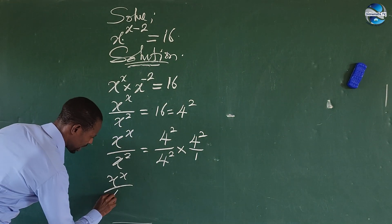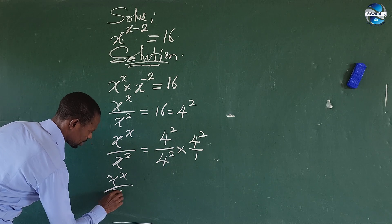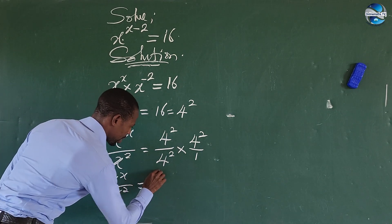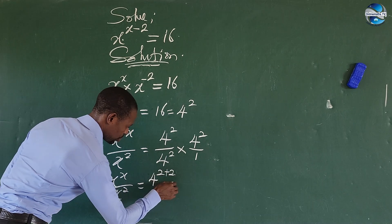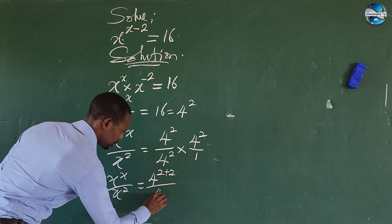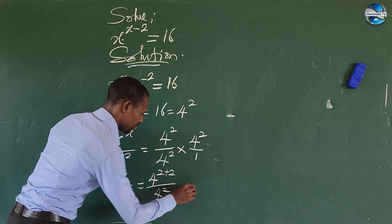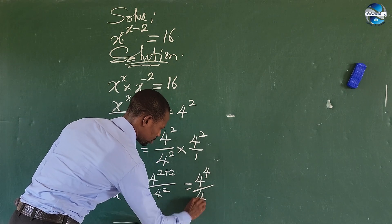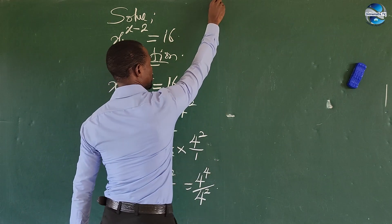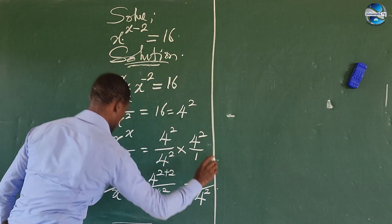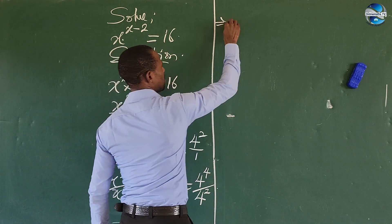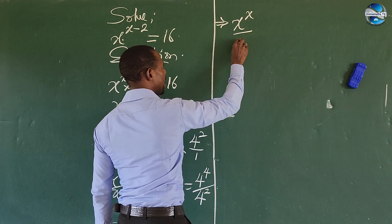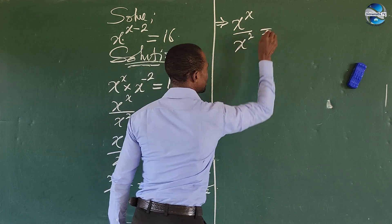So we can rewrite this to give us x to the power of x all over x to the power of 2, this is equal to 4 to the power of 2 plus 2 all over 4 to the power of 2. So this will give us 4 to the power of 4 all over 4 to the power of 2. Let's continue. This implies that x to the power of x all over x to the power of 2 is equal to 4 to the power of 4 all over 4 to the power of 2.